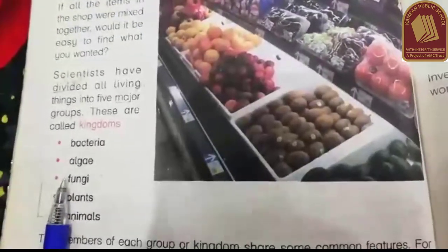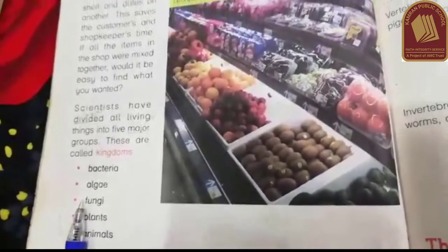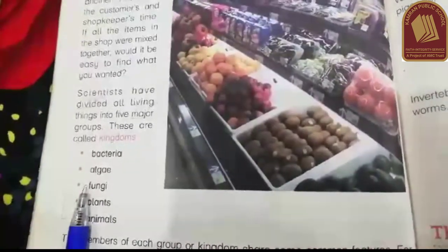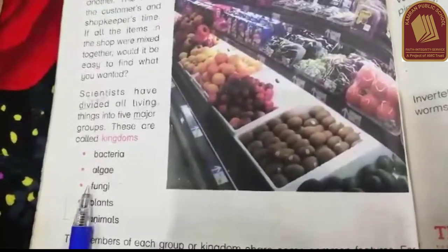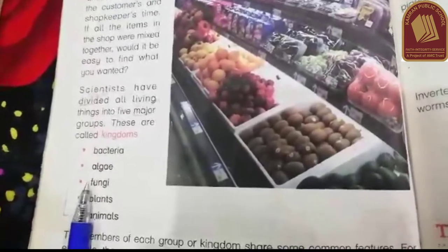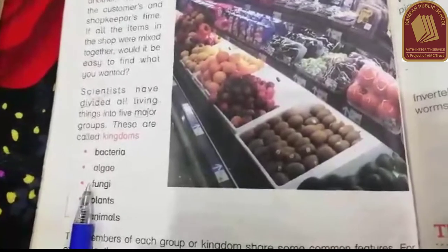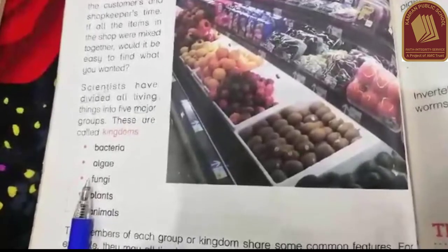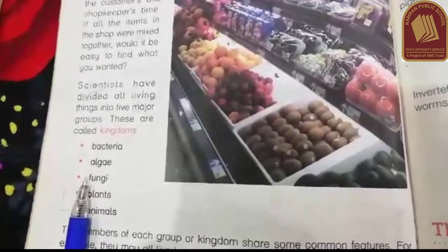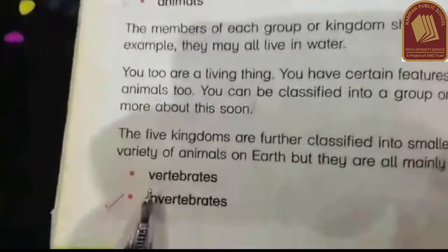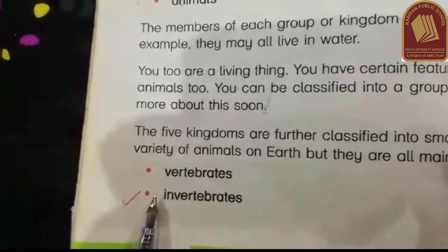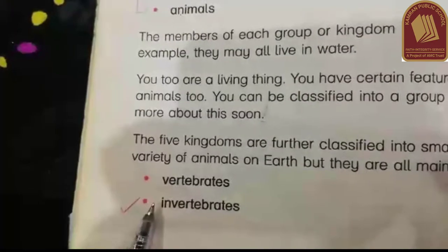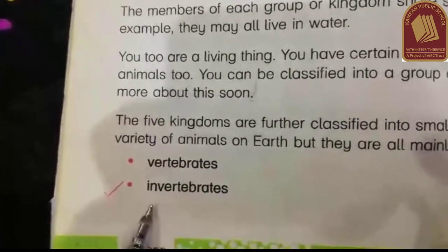Living things are divided into groups called Kingdoms. These five groups were called bacteria, algae, fungi, plants, and animals. In addition to the five kingdoms, scientists divided animals into two larger groups which were vertebrates and invertebrates.